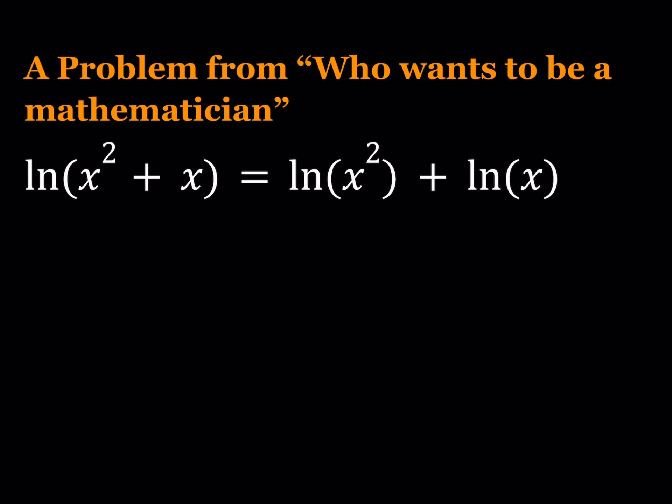By the way, ln means the natural logarithm. Okay, so we're using base e. Alright, so how could we condense the right hand side? Because there's pretty much nothing you can do on the left hand side at this point.